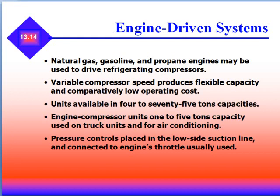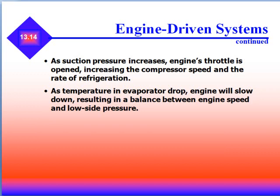Natural gas, gasoline, and propane engines can be used to drive refrigerating compressors. Variable compressor speed produces flexible capacity and comparatively low operating costs. Units are available in 4 to 75 tons capacity, and engine compressor units of 1 to 5 ton capacities are used on truck units and for air conditioning. Pressure controls are placed on the low side suction line and connected to the engine's throttle. As suction pressure increases, the engine throttle is opened, increasing compressor speed and the rate of refrigeration. As the temperature in the evaporator drops, the engine slows down, resulting in a balance between engine speed and low side pressure.